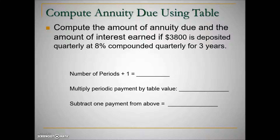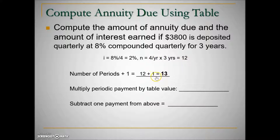Let's look at another example. We need to compute the amount of the annuity due and interest earned if $3,800 is deposited quarterly at 8% compounded quarterly for three years. We need to determine I and N for the annuity table. Because this is an annuity due and deposits are made early, we add one to our number of compounding periods — quarterly for three years would ordinarily be 12, but for an annuity due we add one, giving N = 13.